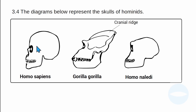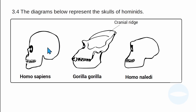The difference: this one — Homo sapiens — is flat, not sloped, while the gorilla is a bit sloped and Homo naledi is also sloped. This one has a brow ridge — the bone on top of the eye. The cranium bone is the bone that houses the brain. Homo sapiens has a big cranium bone, gorilla has a small one, while Homo naledi is bigger than gorilla but smaller than Homo sapiens.